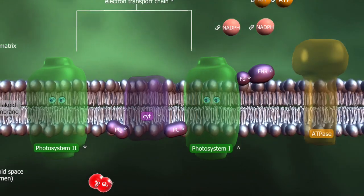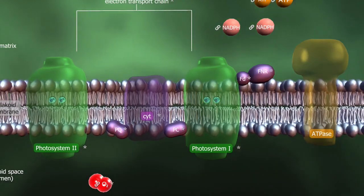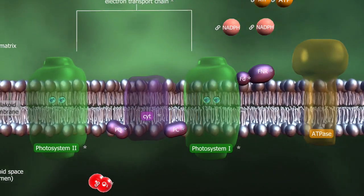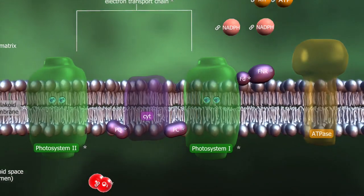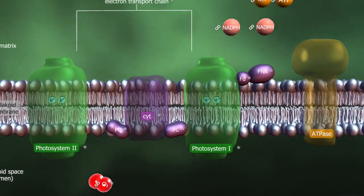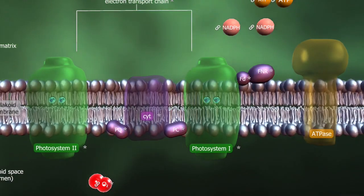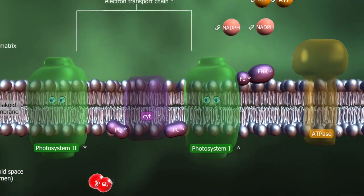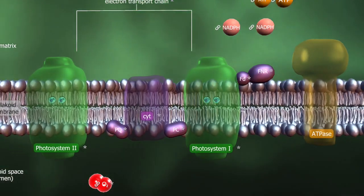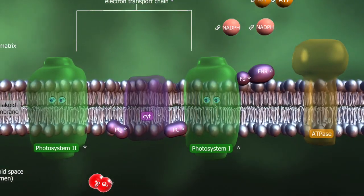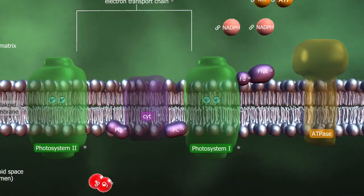To sum up, the energy of the photons causes an unequal distribution of protons. This creates a driving force, which is used for the production of ATP.